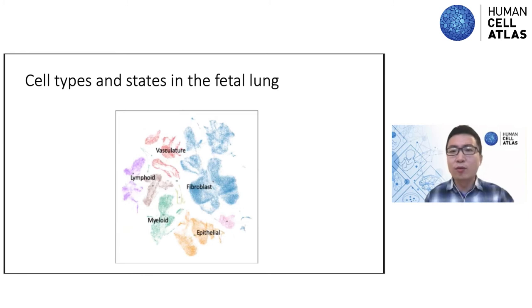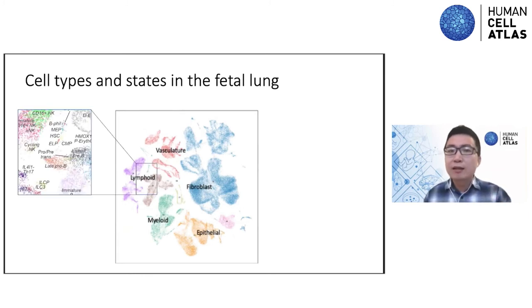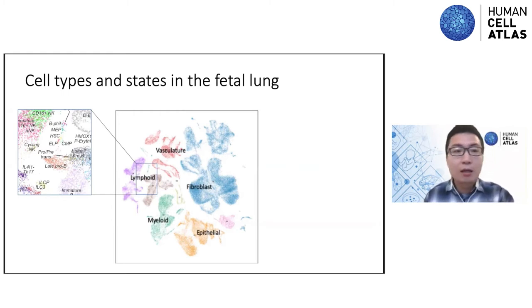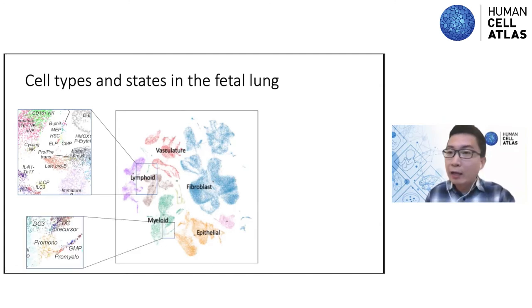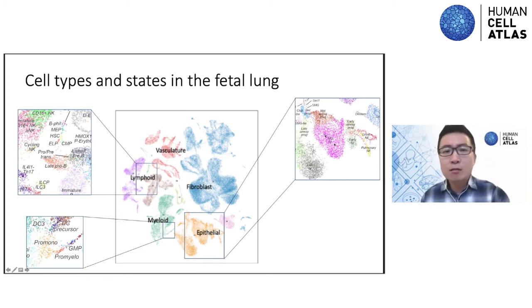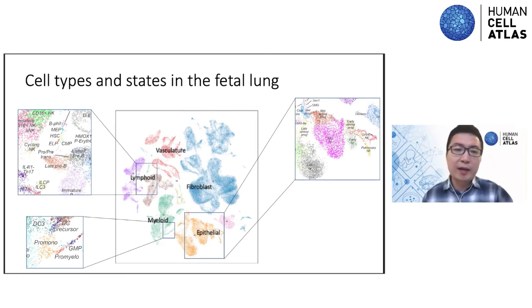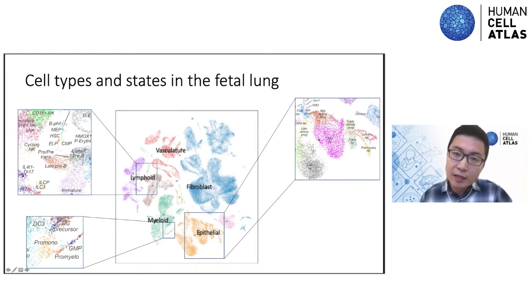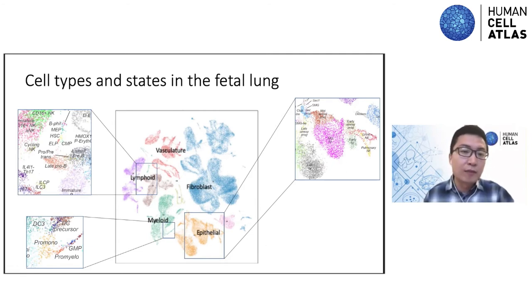Interestingly, among these novel subtypes and states, we see a lot of novel and unexpected progenitors, including immune progenitors in both the lymphoid and myeloid compartments, and epithelial progenitors — notably the multipotent tip progenitor cells. These cell states have spatial and temporal dependency; for example, tip epithelial cells are separated based on their developmental stage with different developmental potentials.